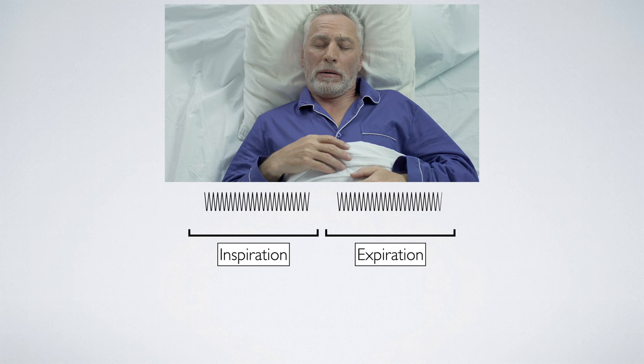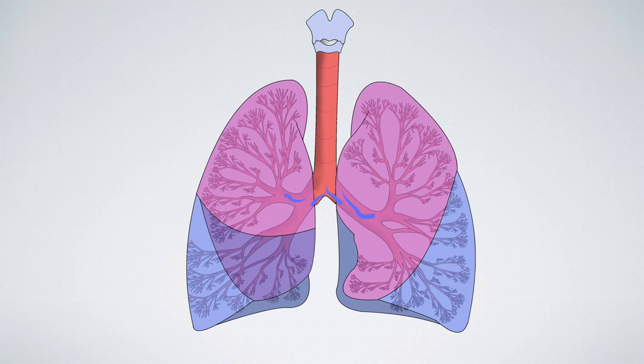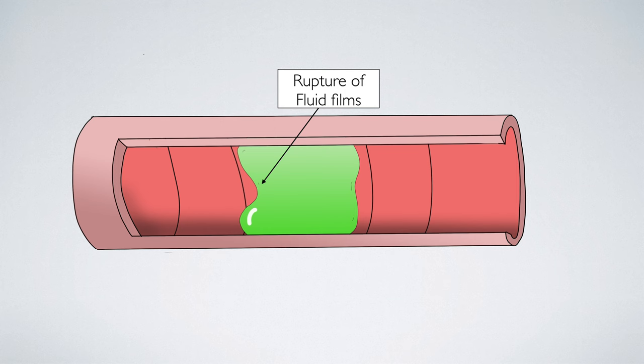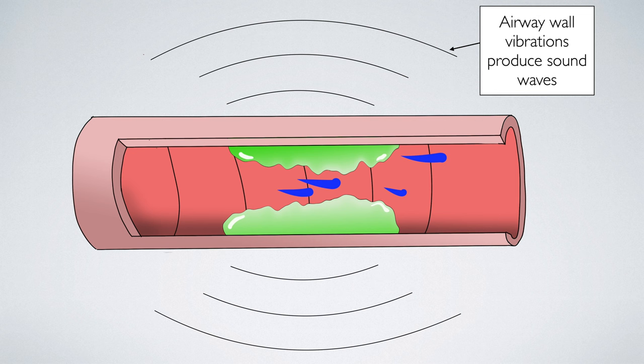Bronchi originates in the larger central airways. They occur due to the disruption of fluid films or secretions within the air passages, leading to vibrations in the airway walls, which in turn result in audible sounds.